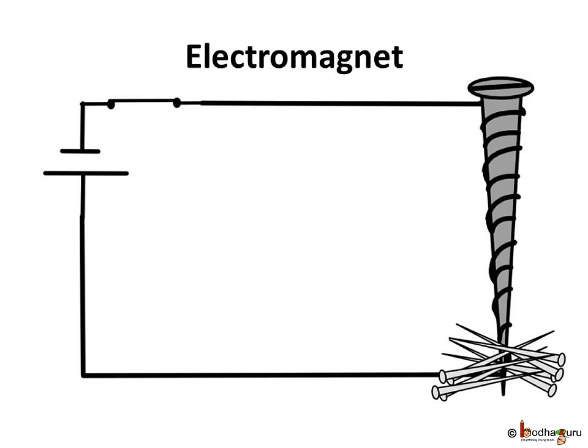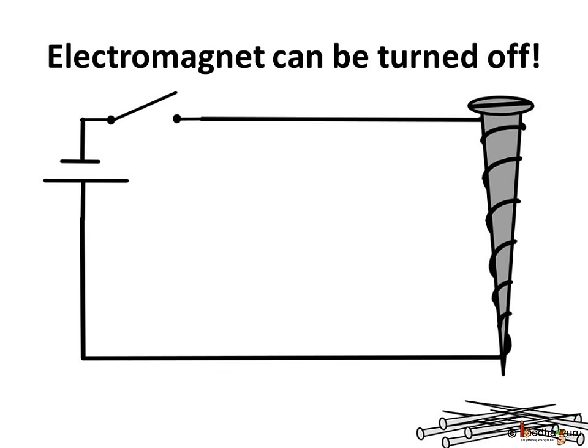It can also be increased by increasing the flow of current through the coil. Let us also not forget, electromagnet can also be turned off by stopping the electric flow of current which made it a magnet.